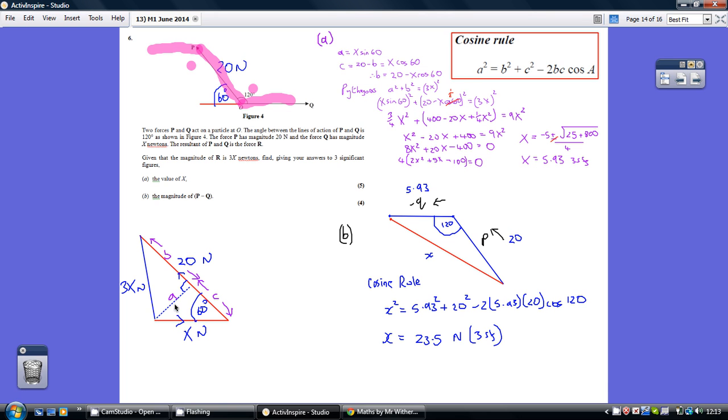Well I think A is simple enough, that's X sin 60, the opposite side. And C is 20 minus B and that is, and C is obviously X cos 60, the adjacent side. So rearranging that to make B the subject, we've got B equals 20 minus X cos 60.